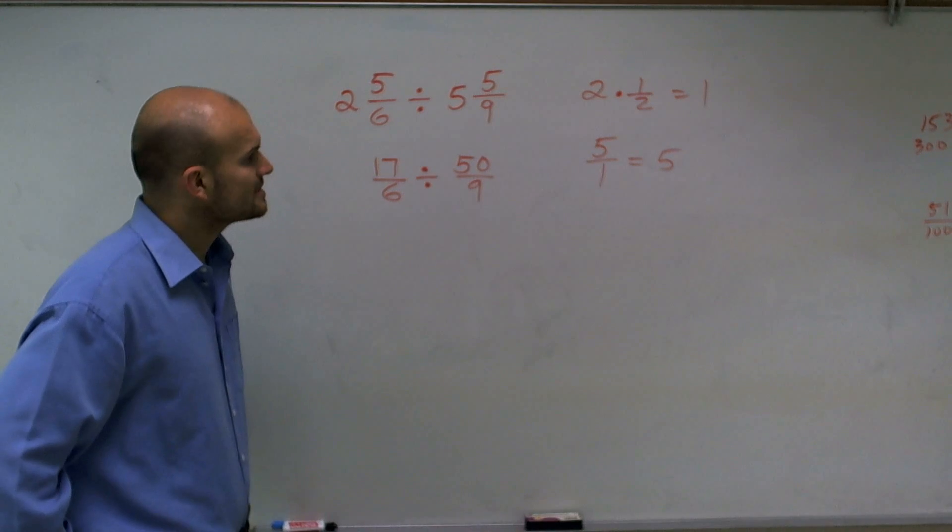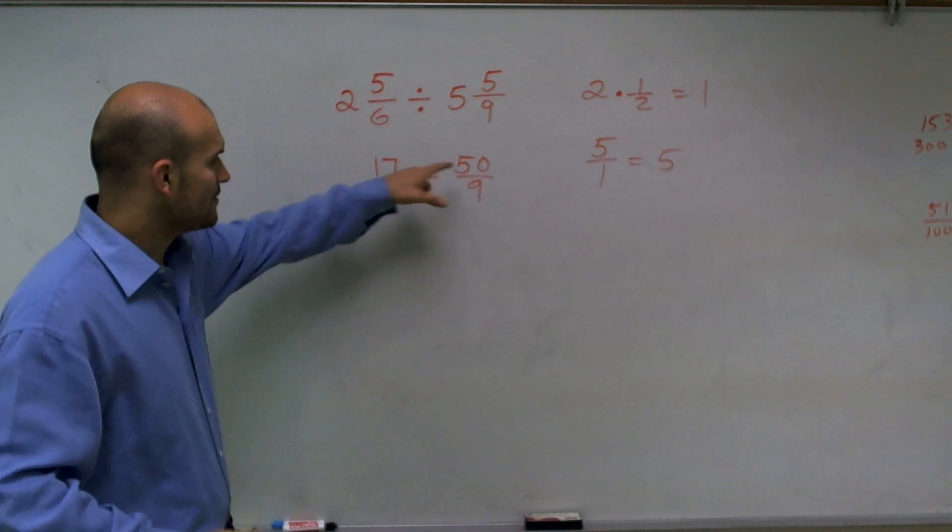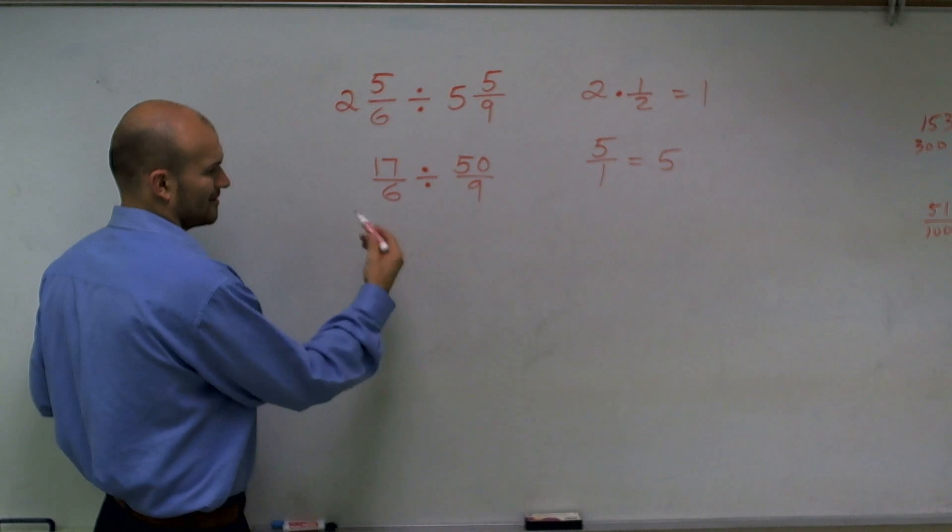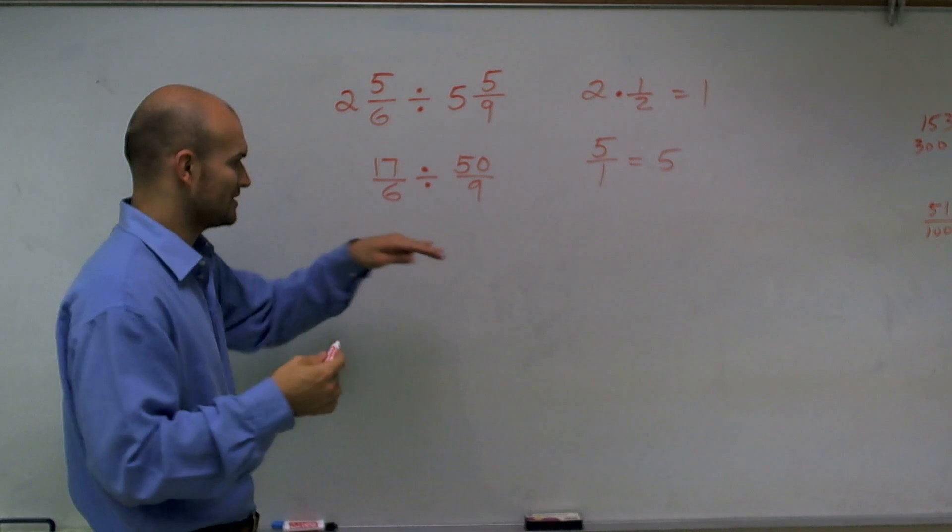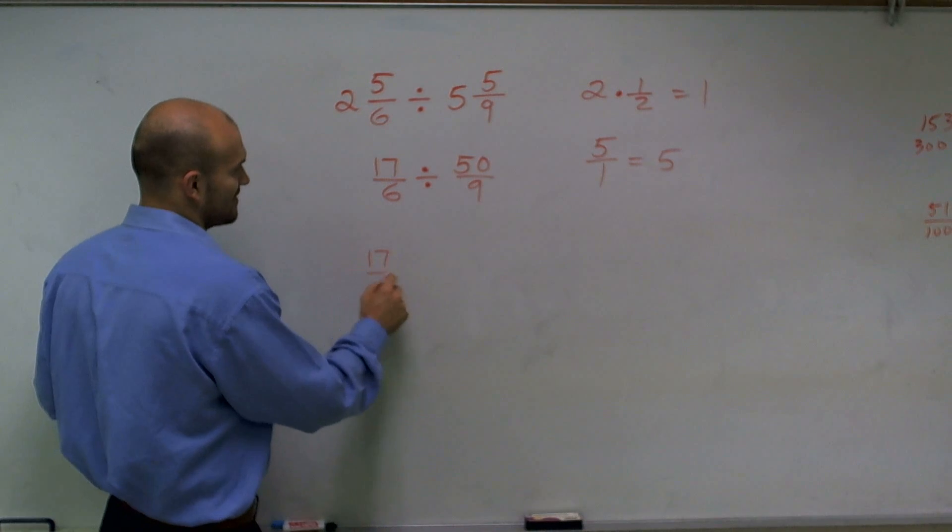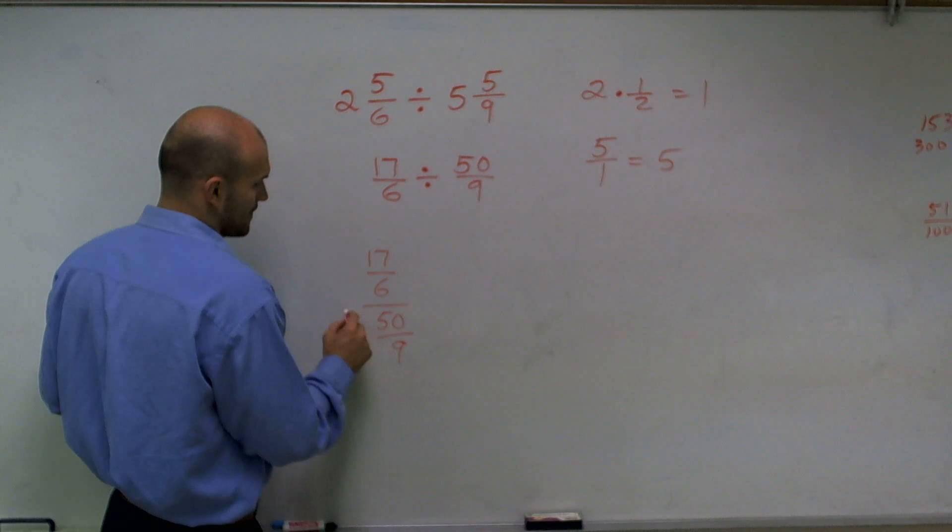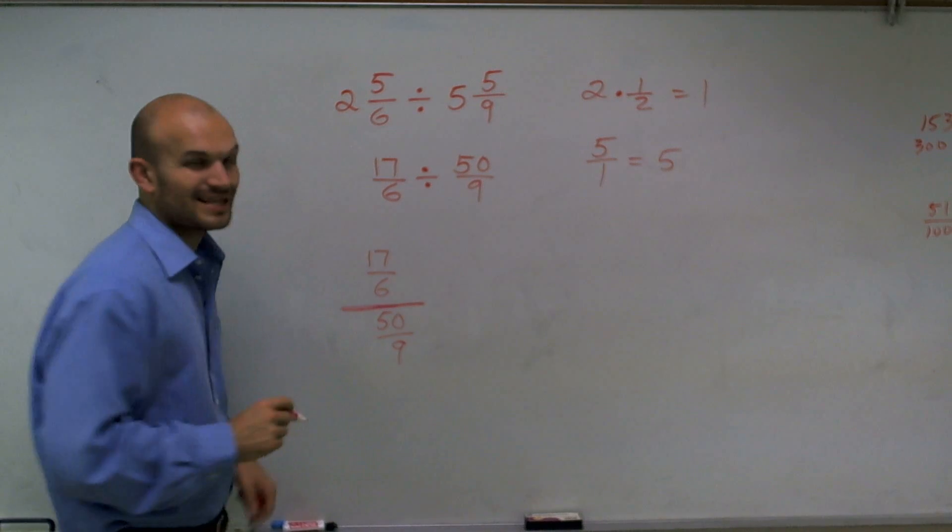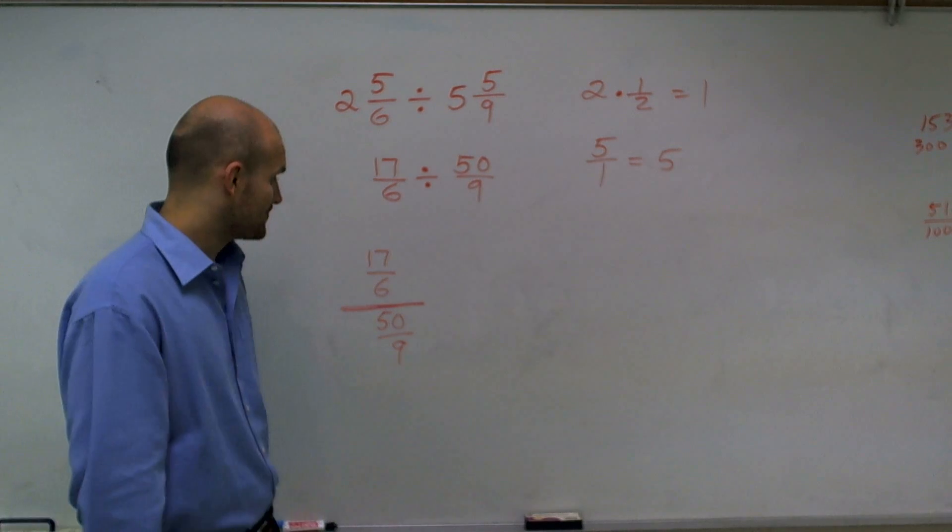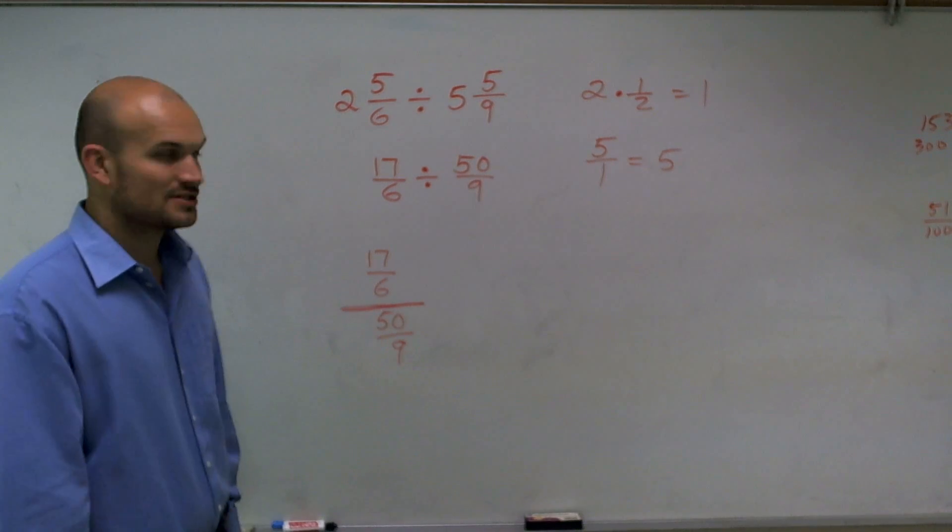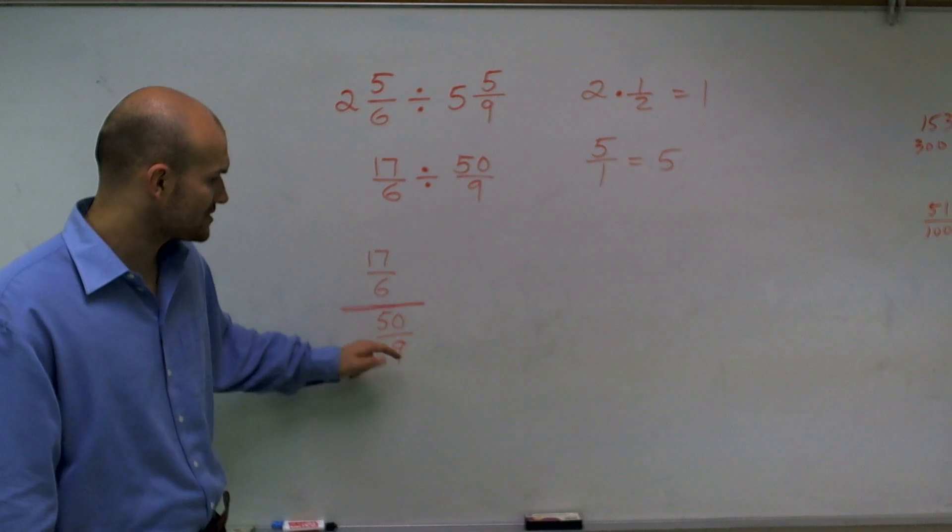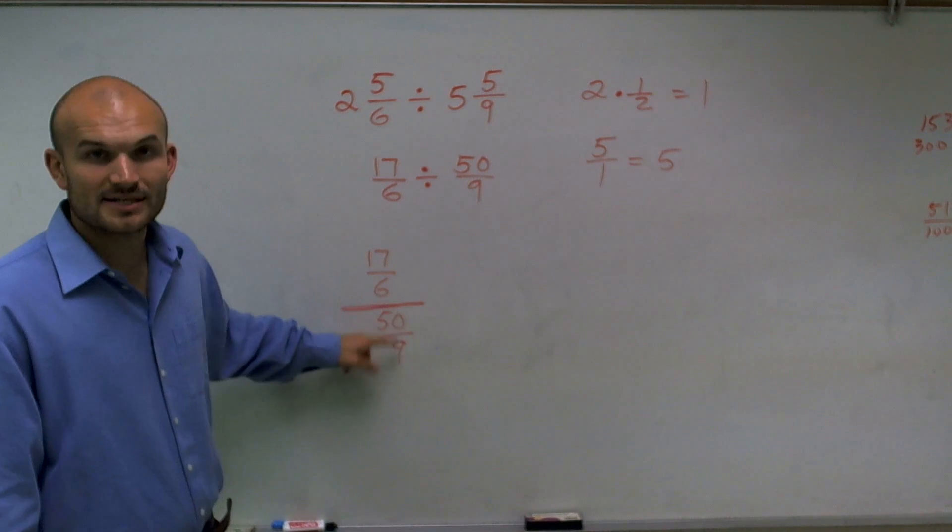So when we look at this problem, if I rewrite this with a fraction bar, so if I write this as 17/6 divided by 50/9, you notice there's a lot of fractions going on here. And one of the ways for us to do this, to get rid of all these fractions, is I need to get rid of this down below here.